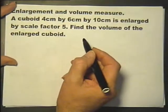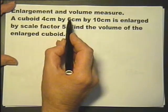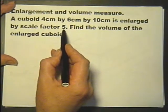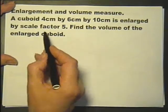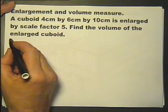Let's consider this question: A cuboid is 4 by 6 by 10 and it's enlarged by scale factor 5. Find the volume of the enlarged cuboid. So let's look at method 1.